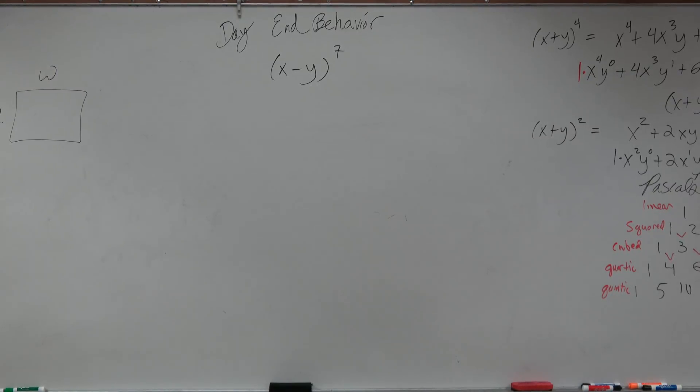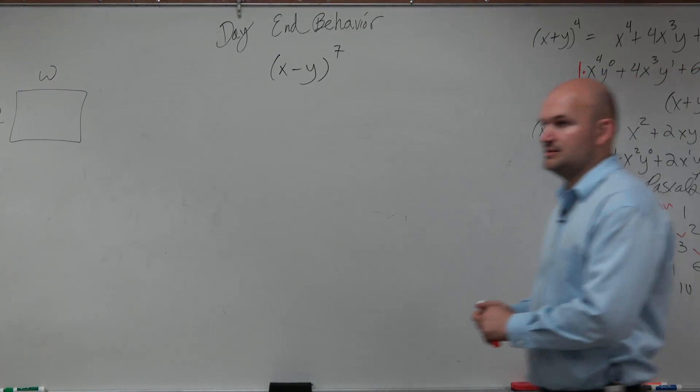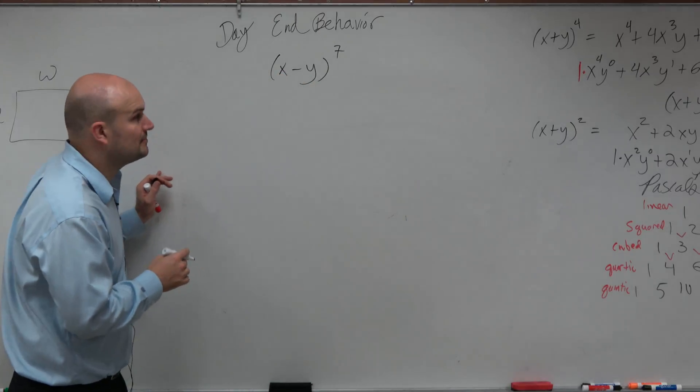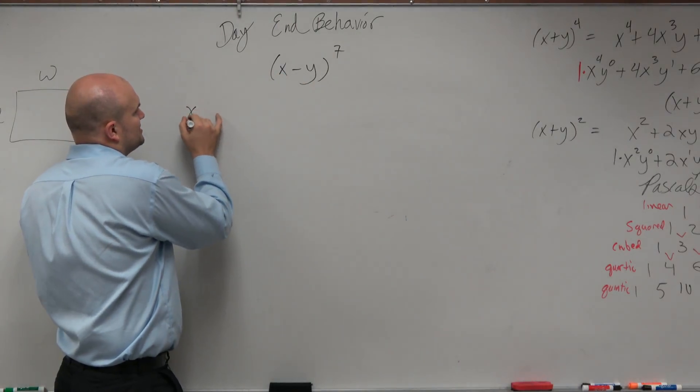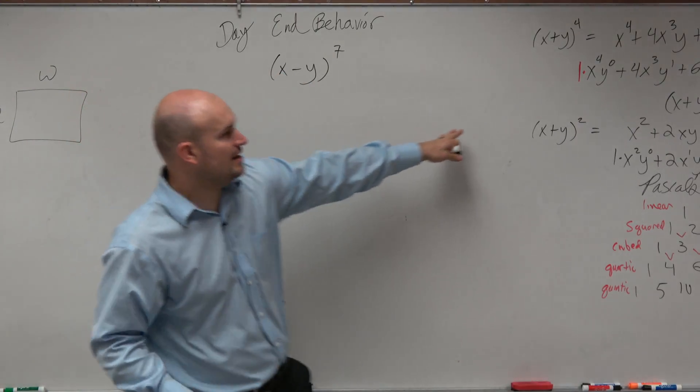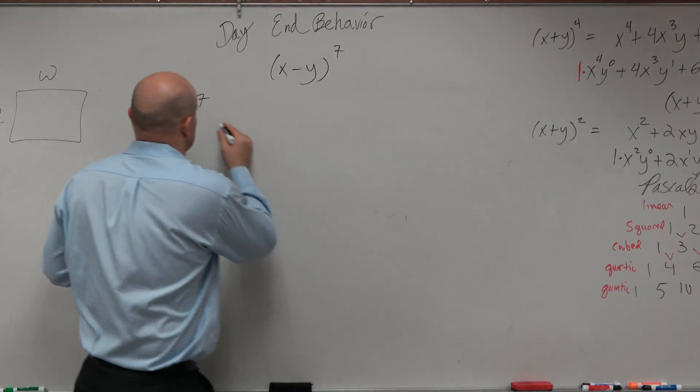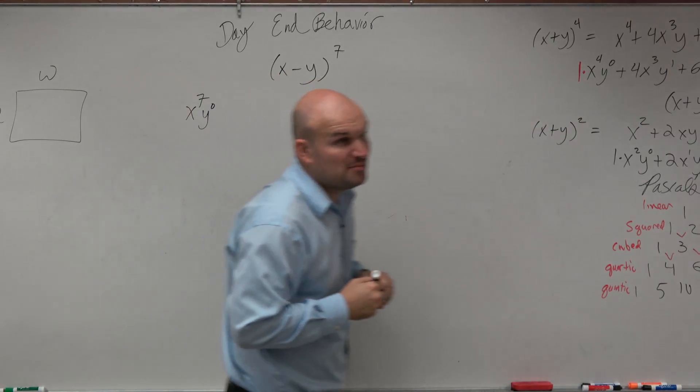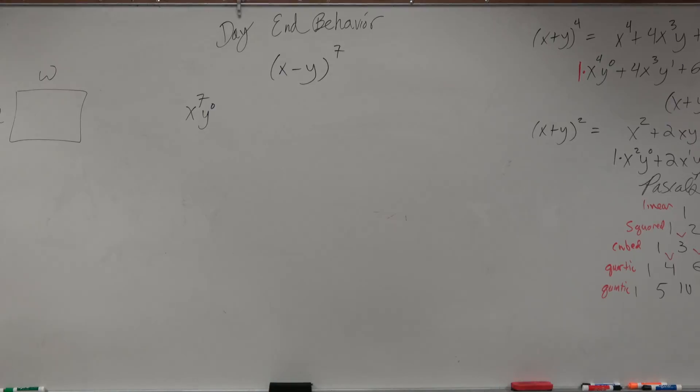So in this example, what I recognize is my first term is going to be x to the 7th, and kind of like how I represented here, my last term would be y to the 0. Would everybody agree with me that it would be my first term?